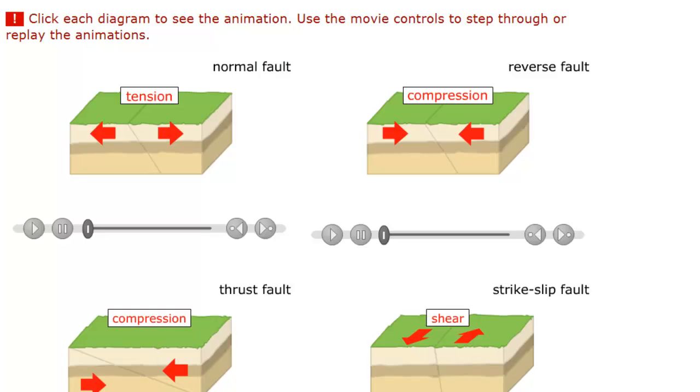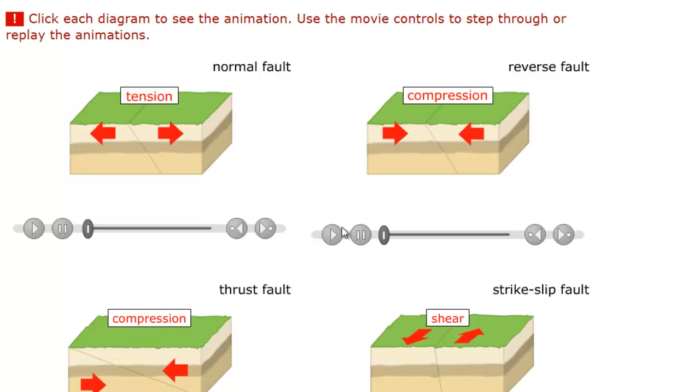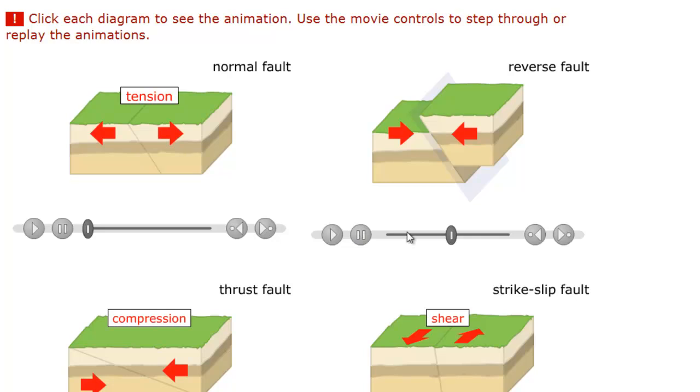So let's go back to the animation. Here's our compression. And so you can see it just follows right along the lines of that fault plane. And so it pushes into each other, pushes in, pushes in, and it has no place else to go but follow the angle of the fault line.